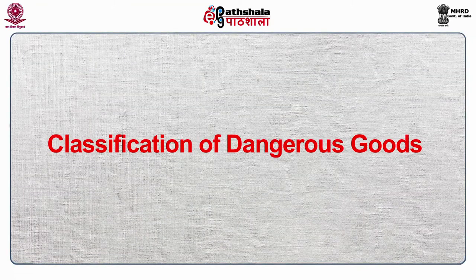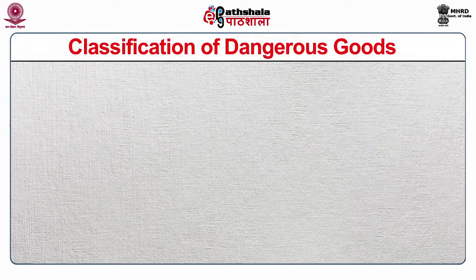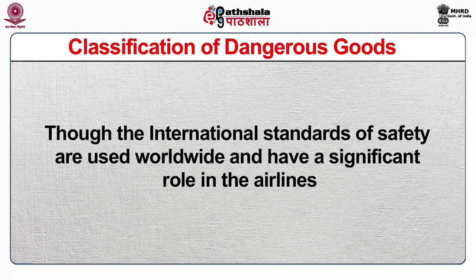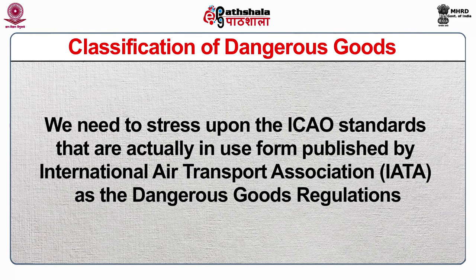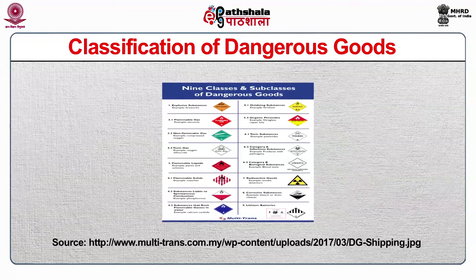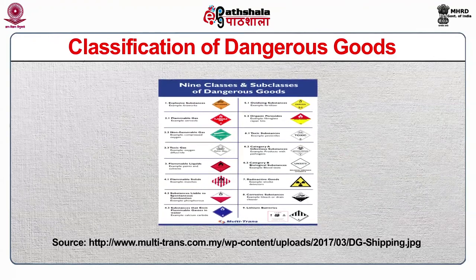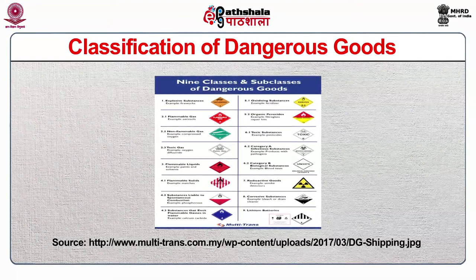Now I will discuss about the classification of dangerous goods. Though the international standards of safety are used worldwide and have a significant role in the airlines, we need to stress upon the ICAO standards that are actually in use, published by International Air Transport Association as the Dangerous Goods Regulations. Dangerous goods are also called hazardous materials or HAZMAT for short and include dry ice, explosives, flammable materials or substances, lithium batteries and chemicals. Some examples of common items that qualify as dangerous goods that most people fail to recognize are certain combustible oils, nail polish and perfume.